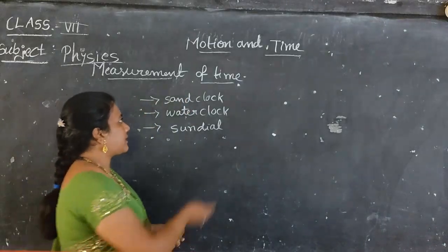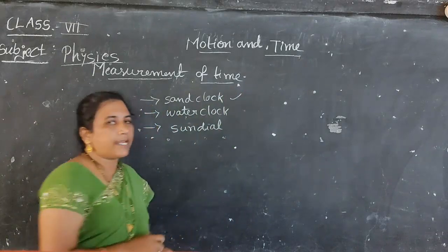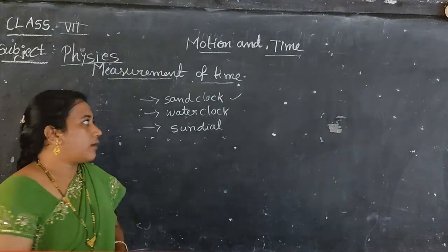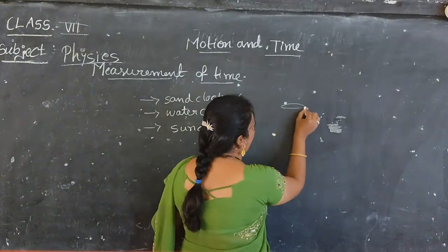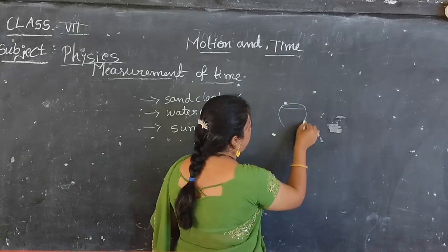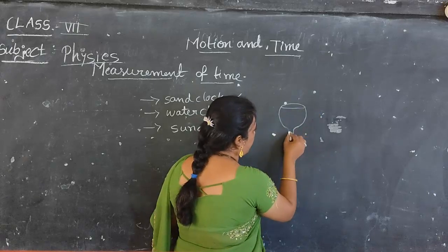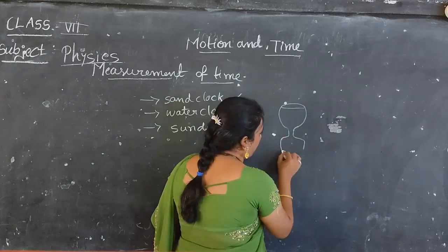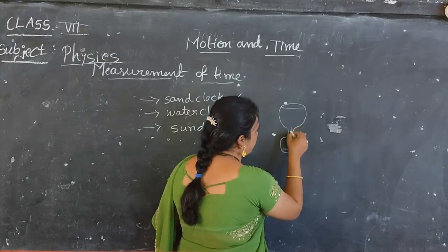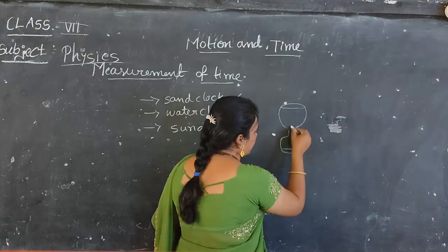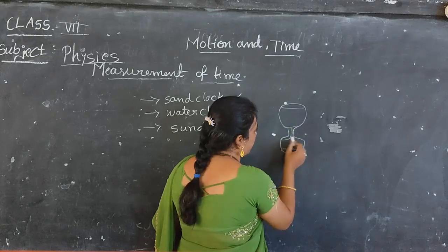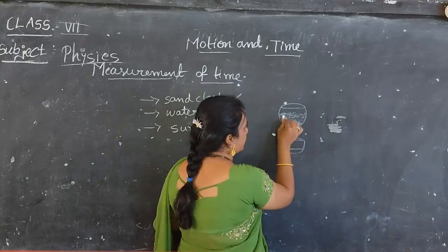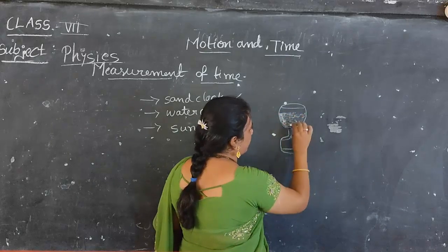Now coming to the sand clock — how does it work? The sand clock is a device used to measure a time period. It has two bulb-like structures attached by a narrow neck with a small hole. This hole allows the passage of sand particles from one bulb to another. There are one-hour sand clocks and minute sand clocks as well.